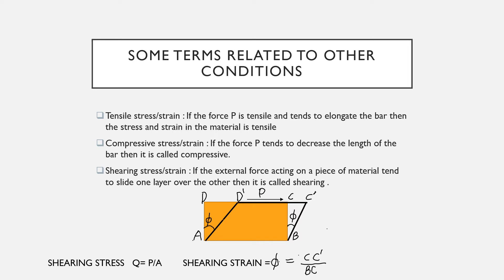If the force P tends to decrease the length of the bar, the stress and strain is called compressive. The third type is shearing stress or strain — if the external forces acting on a piece of material tend to slide one layer over the other, it is called shearing. The shearing stress Q equals P upon A, and the shearing strain equals CC' upon BC.